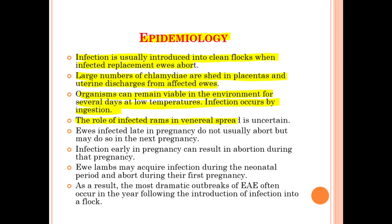The role of infected rams in venereal spread is uncertain. Ewes infected late in pregnancy do not usually abort, but may do so in the next pregnancy. Infection early in pregnancy can result in abortion during that pregnancy. Ewe lambs may acquire the infection during the neonatal period and abort during their first pregnancy. As a result, the most dramatic outbreaks of EAE often occur in the year following introduction of the infection into a flock.